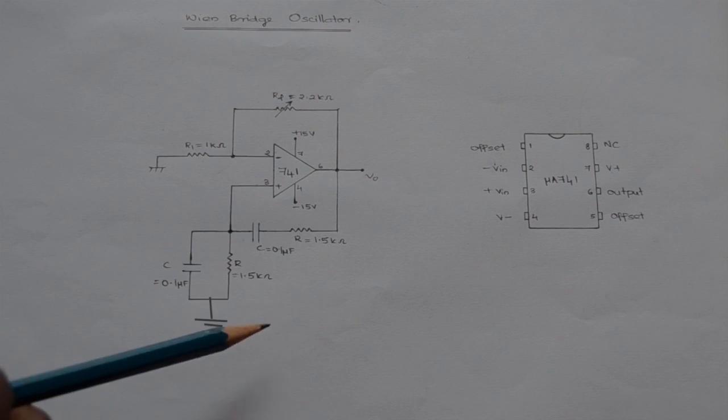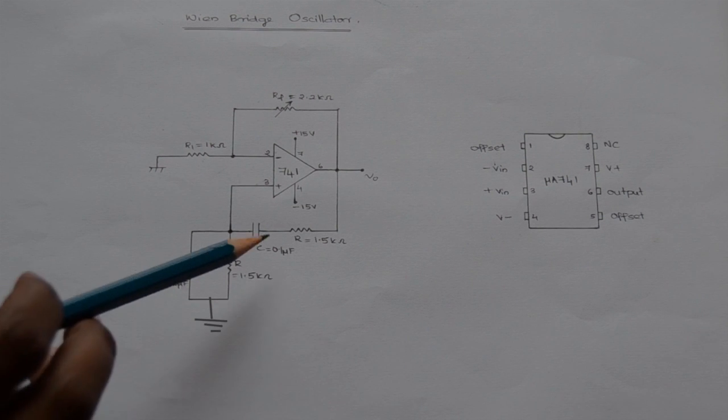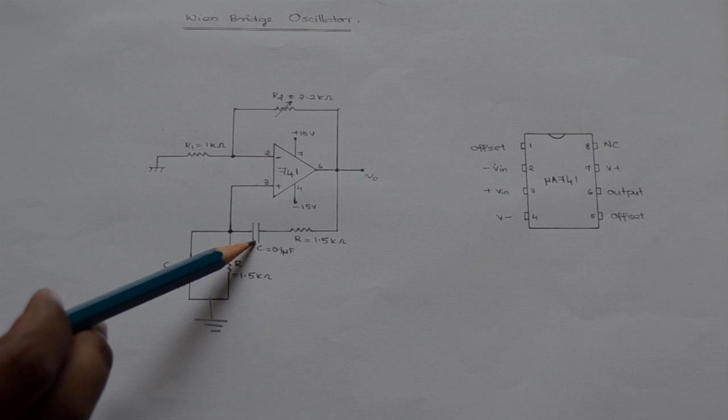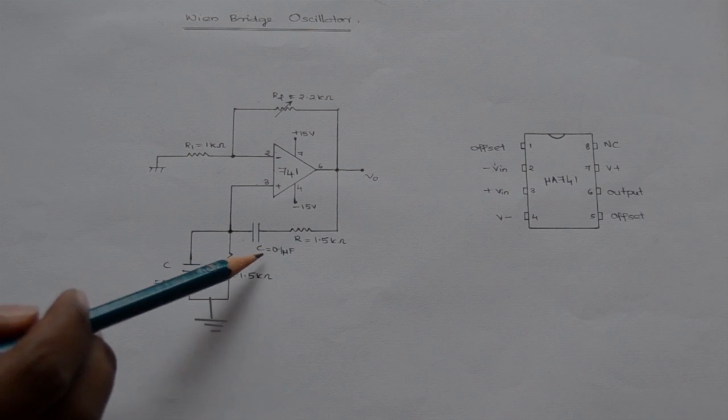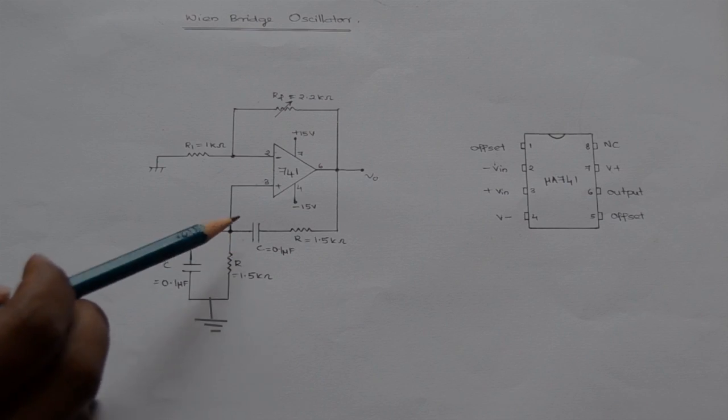In the feedback network, as already said, it consists of a series RC network and a parallel RC network. The phase shift provided by the series RC network is cancelled out by the phase shift provided by the parallel RC network. Therefore, the total phase shift is 0, which satisfies the Barkhausen criteria.